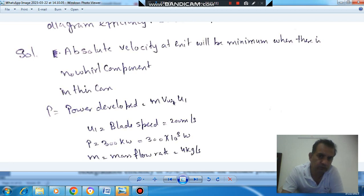So there will be only flow component. The power output, in the absence of a whirl component, will be given by M × blade speed × VW1. And the power output is given as 300 kW, which is 300,000 Watts. Blade speed is given as 200 m/s and mass flow rate is 4.